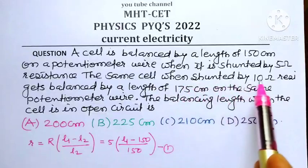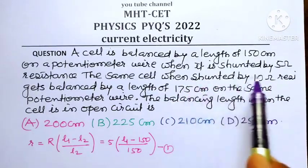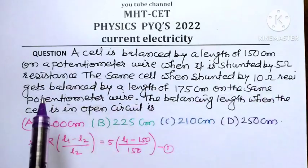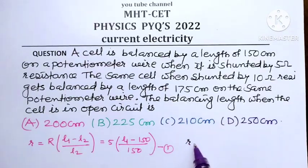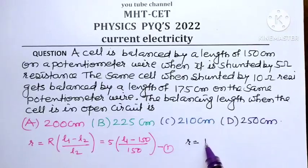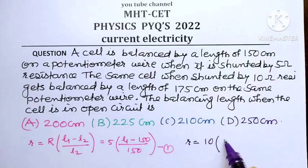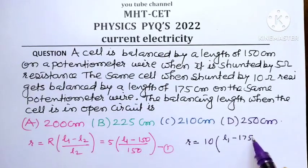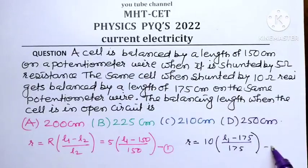Now, the same cell when shunted by 10 ohm resistance gets balanced by a length of 175 cm. This means there is no change in internal resistance, the cell is the same. So small r equals, now the shunt resistance capital R is 10 ohm and the corresponding balancing length is 175 cm. So it is L1 minus 175 divided by 175. This is equation number 2.